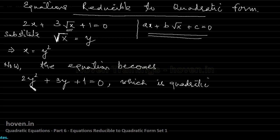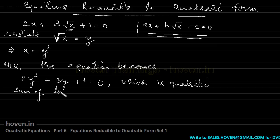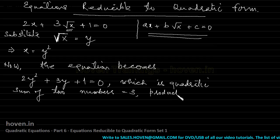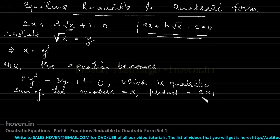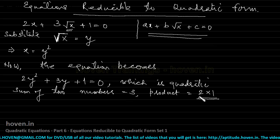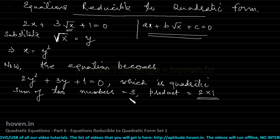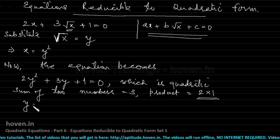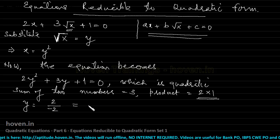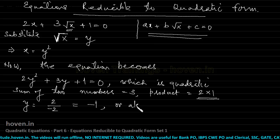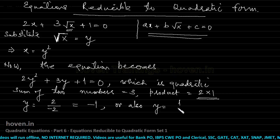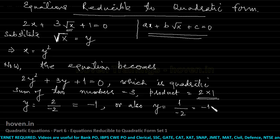Now I will solve this for y. I have to find two numbers whose sum is 3 and product equals 2×1 = 2. By looking at this, I can see the two numbers are 2 and 1, because 2×1 = 2 and 2+1 = 3. So the solution is: y = −2/2 = −1, or y = −1/2.